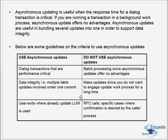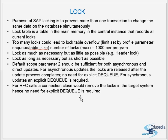The next topic is locking. Whenever there is an update or modification statement, we have to lock. Whether enqueue should be followed by a dequeue depends on whether it's synchronous or asynchronous. Lock usage goes with updates, and we have to write the lock appropriately in the program. We also limit the number of locks held by a program to avoid lock table overflow. Locks can be checked from transaction SM12.